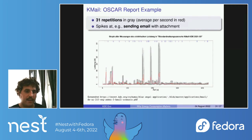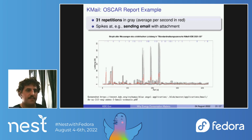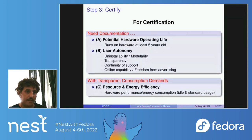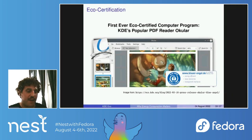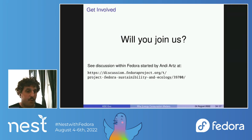Once you feed data into the program, you get a report back. This example is for the KMail email client from KDE — you can see 31 repetitions of the standard usage scenario with spikes in energy consumption at certain points, for example when sending an email with an attachment, which requires more processes. For certification, you need documentation of hardware operating life and user autonomy categories, and then you publish and submit your consumption demands in resource and energy efficiency. We now have the first ever eco-certified computer program with Okular, certified by the Blue Angel in February.